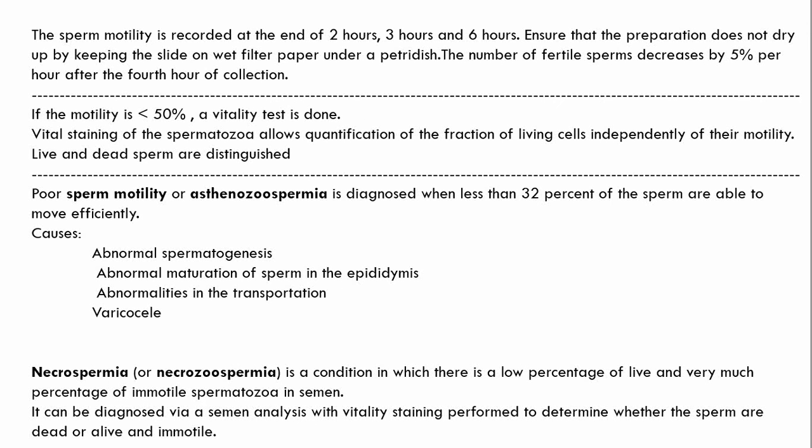Sperm motility is recorded at the end of 2 hours, 3 hours, and 6 hours. Ensure that the preparation does not dry by keeping the slide on a wet filter paper under a petri dish, which provides a moist environment. The number of fertile sperms decreases by 5% per hour after the 4th hour of collection. If motility is less than 50%, a vitality test is done. Vital staining of spermatozoa allows quantification of the fraction of living cells independently of their motility.